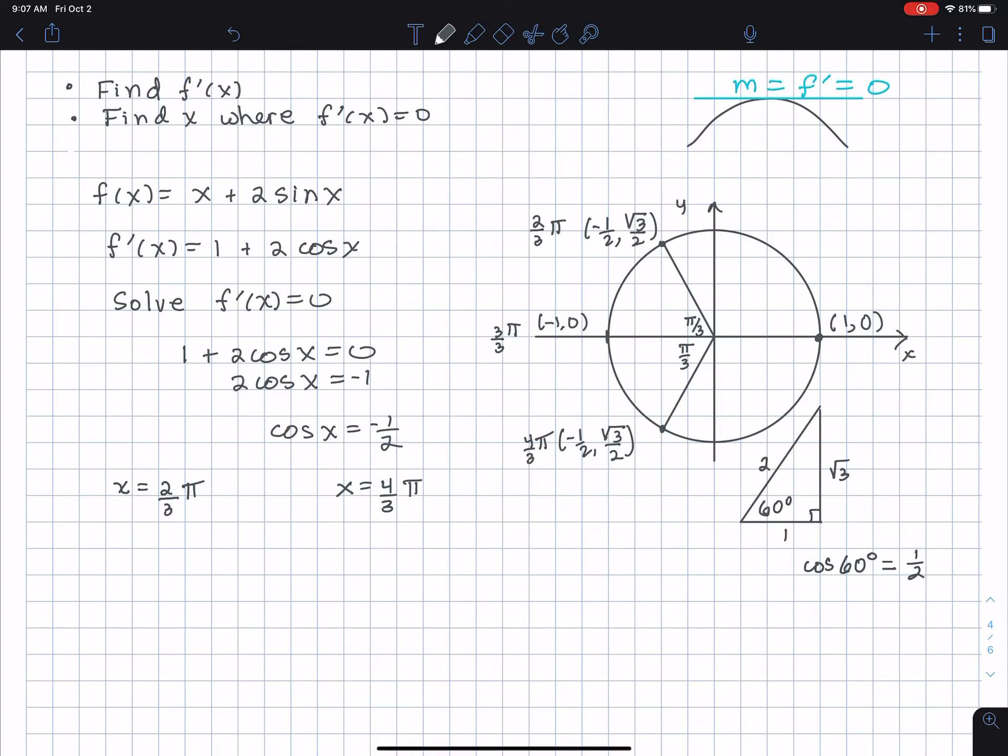Keep in mind that cosine is the first coordinate, which must be -1/2. This takes us to quadrants two and three. Going around the circle, I can add 2π, 4π, etc. In general, I include +2kπ for both solutions. That is the answer.